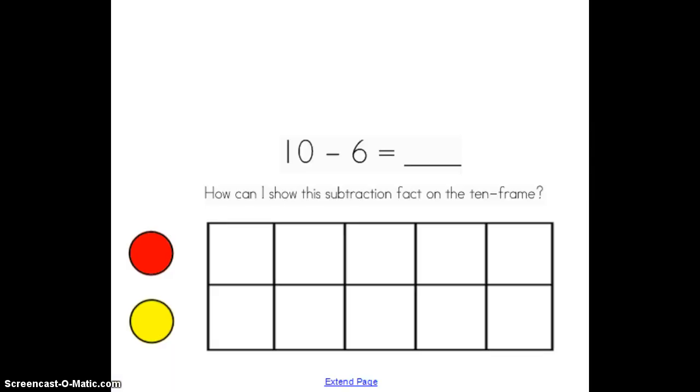When I think of the number 10, my brain automatically thinks of a 10 frame because I know when a 10 frame is filled, it makes 10. So I'm going to show this subtraction number sentence, 10 minus 6 equals, using my 10 frame. I want you to take a couple of seconds and think, how would we use a 10 frame to help us solve this subtraction fact? Well, to get started, I know that 10 is my whole. So I'm going to fill my 10 frame with counters so that I can make 10.